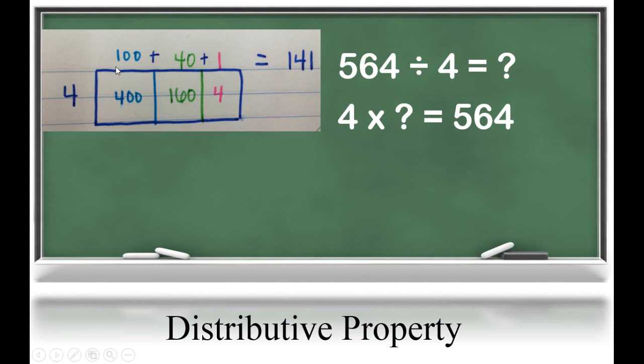4 times 100 equals 400. 4 times 40 equals 160. And 4 times 1 equals 4. 400 plus 160 plus 4 equals our dividend of 564. 100 plus 40 plus 1 equals our quotient of 141.